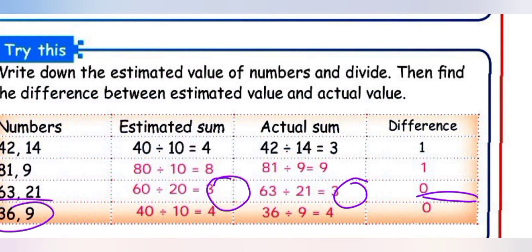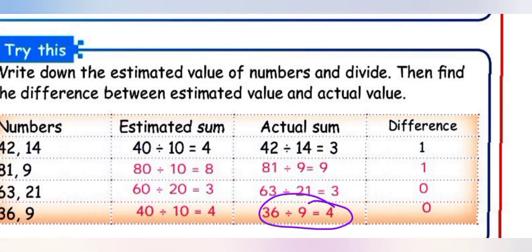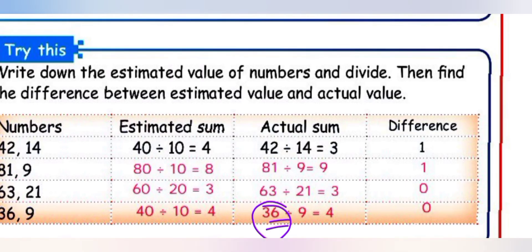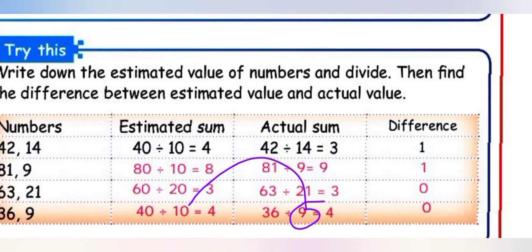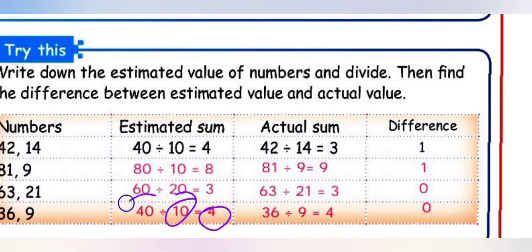Next: 36 ÷ 9. Actual: 36 ÷ 9 = 4. Estimated: 36 — ones place 6 is greater than 5, so 3 tens becomes 4 tens, giving 40. Estimated: 40 ÷ 10 = 4. Difference: 4 minus 4 equals 0.